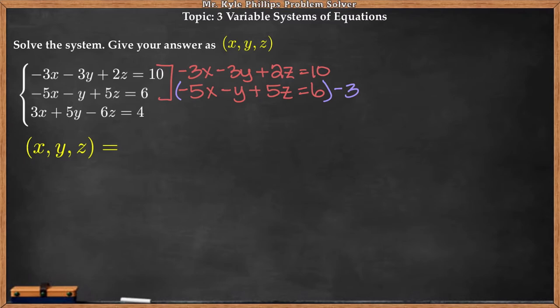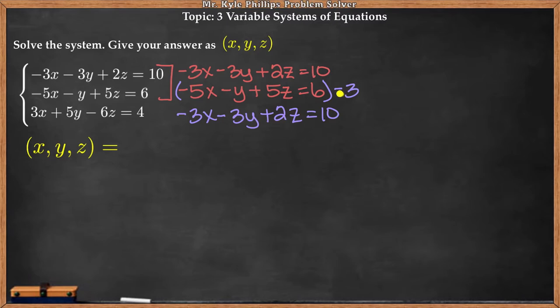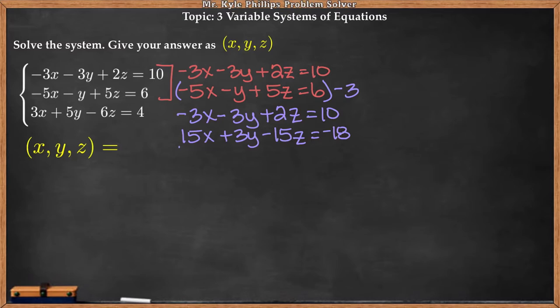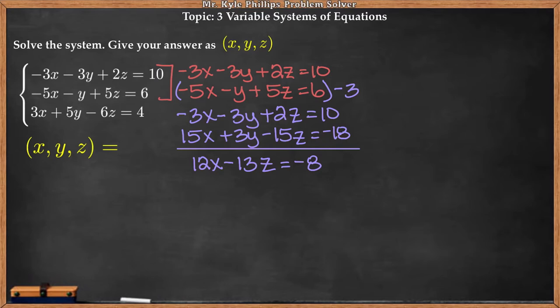That would make this negative 1 turn to a positive 3, and then my y's would cancel. So let's multiply the bottom by negative 3. This system is not going to change, so I'll go ahead and rewrite it: negative 3x minus 3y plus 2z equals 10. Now I'm going to take that negative 3 and distribute it to each term, giving me 15x plus 3y minus 15z equals negative 18. Now the y's cancel.